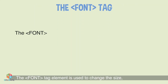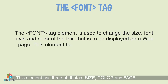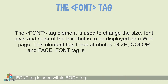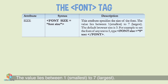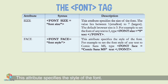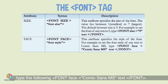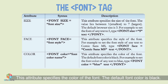The Font Tag: The font tag element is used to change the size, font style, and color of text displayed on a web page. It has three attributes: size, color, and face. The size attribute specifies the font size with values from 1 (smallest) to 7 (largest); the default browser size is 3 — for example, to set font size to 5. The face attribute specifies the font style — for example, to set the font style to Comic Sans MS. The color attribute specifies the font color; the default is black — for example, to set the font color to blue.